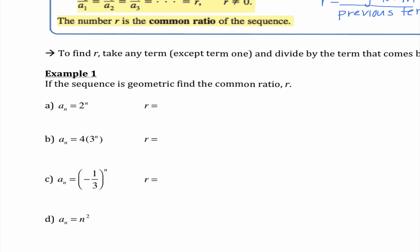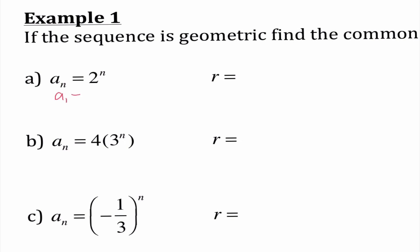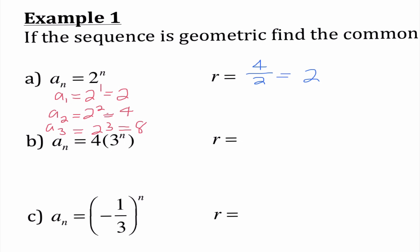Example 1: if the sequence is geometric, find the common ratio r. To figure out the pattern, we need to find three terms. So a₁ is 2 to the first power, which is 2. a₂ would be 2 squared, which is 4. And a₃ would be 2 cubed, which is 8. It looks like I'm multiplying by the same thing each time. Taking any term divided by the previous term gives us a ratio of 2. So 2 times 2 is 4, and 4 times 2 is 8 — this is geometric.